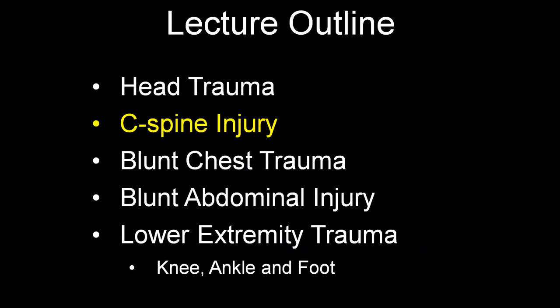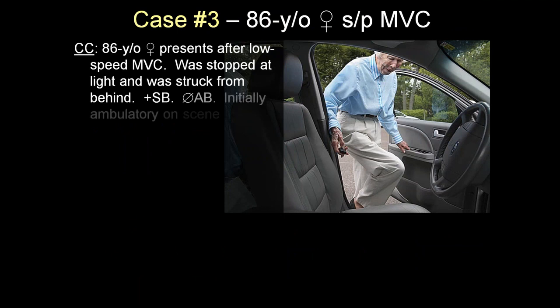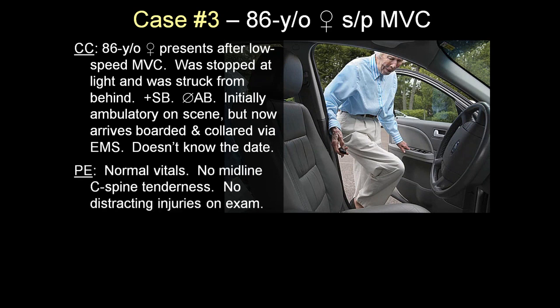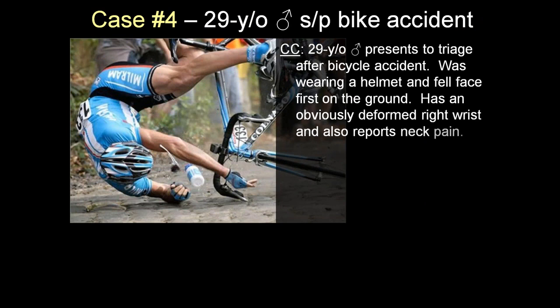Topic number two: cervical spine injury. Here are my real cases. An 86-year-old female presents after a low-speed motor vehicle collision. She was the restrained driver, stopped at a light, struck from behind. She was wearing her seatbelt, the airbag appropriately did not deploy. She was initially ambulatory but now presents boarded and collared. She's a little uncertain about the date, vital signs are normal, no midline cervical spine tenderness, and no distracting injuries on exam.